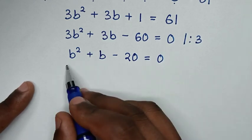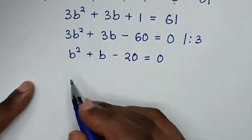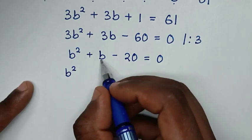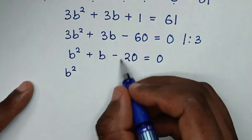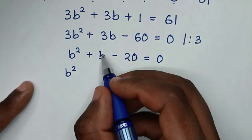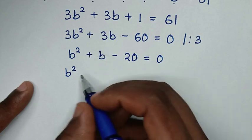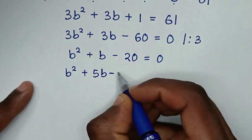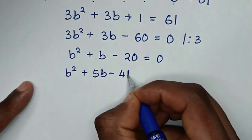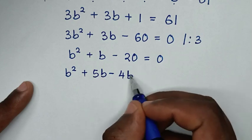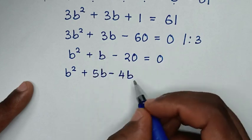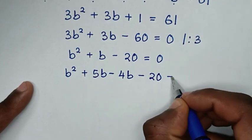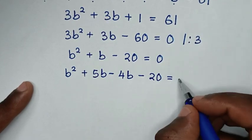We solve b² plus b minus 20 equals 0 by grouping and factorization. We rewrite b as plus 5b minus 4b, giving b² plus 5b minus 4b minus 20 equals 0.